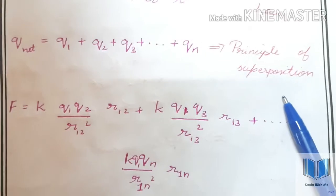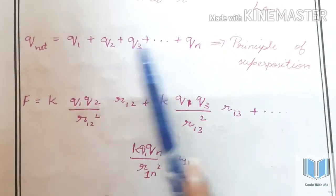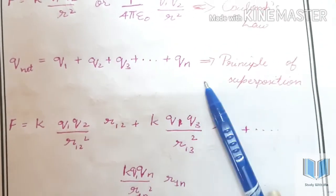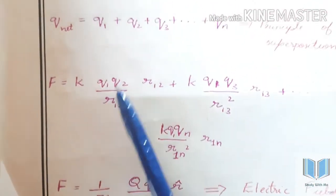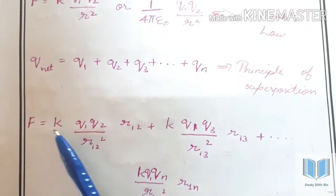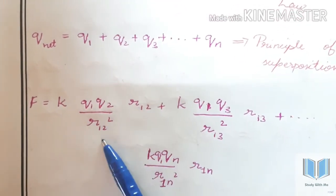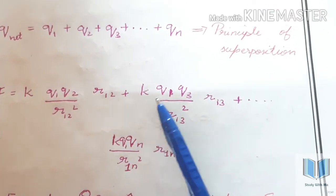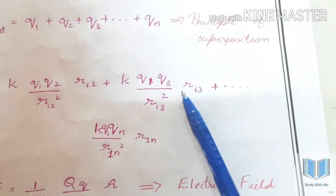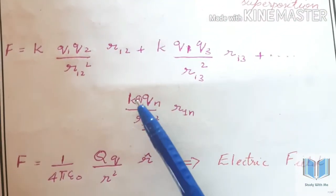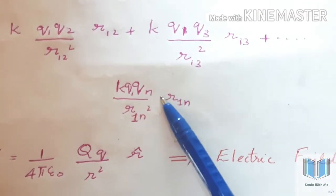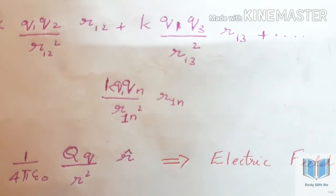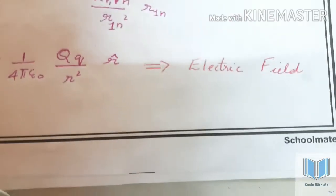Next, we will use the superposition principle. The total force on q1 is the sum: q1 plus q2 plus q3. Using the formula, we write: k q1 q3 by r13 squared into r̂13, and so on up to k q1 qn by r1n squared into r̂1n.